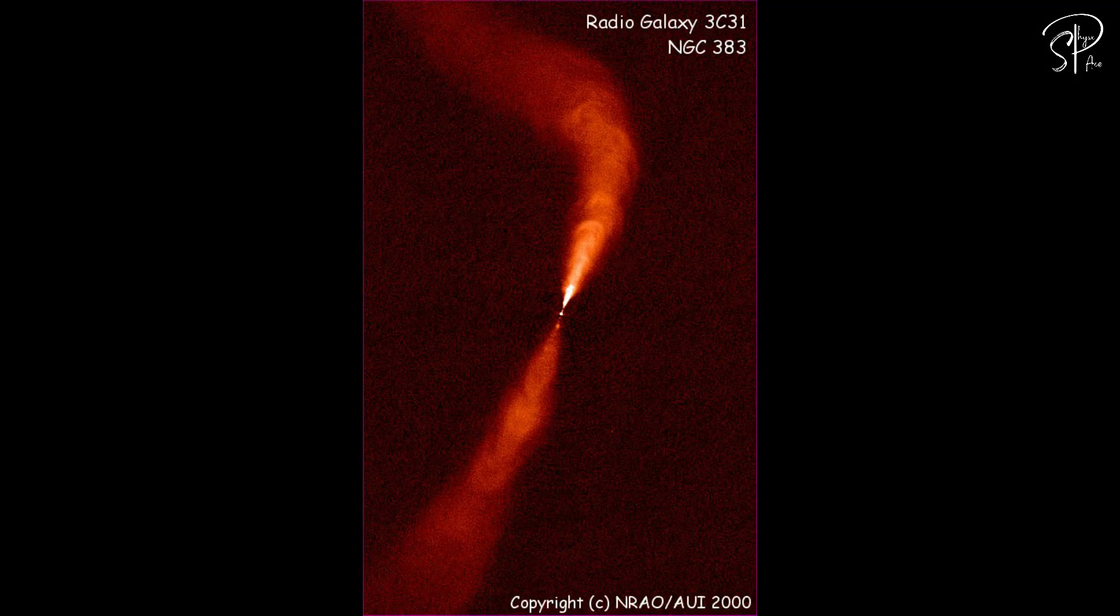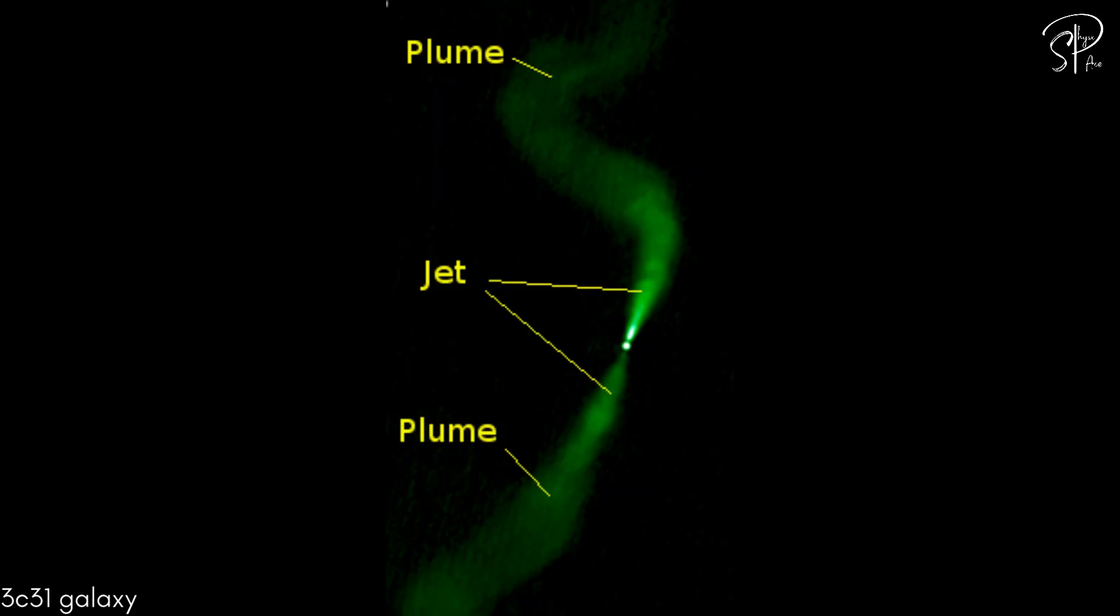In the case of 3C31 galaxy, both jets are almost perpendicular to our line of sight, within the plane of the sky. As a result, it is classified as a radio galaxy, with both jets being visible. The upper jet, slightly angled toward Earth, appears brighter.